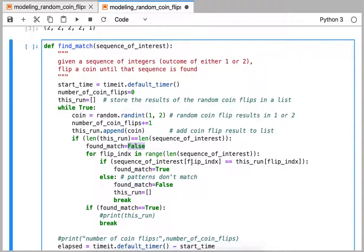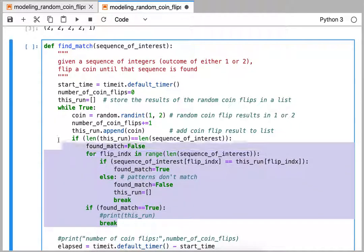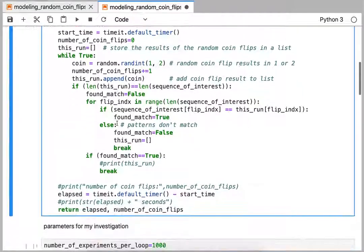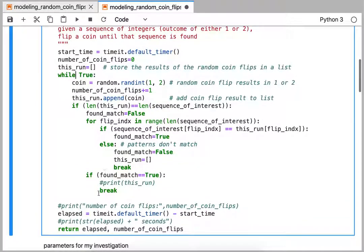We'll either find an element that does not match in both lists, in which case we'll break out of the for loop, or if we reach the end of the for loop and we did find a match, then we'll say we found a match so we're breaking out of this while loop. At the end we'll return two values: the number of coin flips and how long it took to find that.